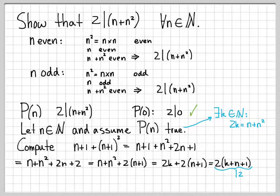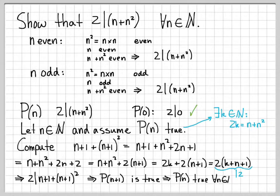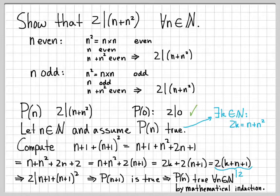Think about what I started computing: I started with n plus one plus the quantity n plus one squared. What we've just shown is that two does divide n plus one plus n plus one squared, so this is an even number, and we have shown that P of n plus one is true. We verified that P of zero is true, and assuming P of n is true, we've shown that P of n plus one is true. So by mathematical induction, P of n is true for all n in the natural numbers. We accomplished what we wanted — we did it both ways: a direct proof, and then the same result using the method of mathematical induction.